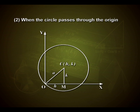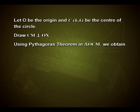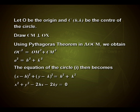In the next case, when the circle passes through the origin: let O be the origin and C at (h, k) be the center. Draw CM perpendicular to OX. Using Pythagoras theorem in triangle OCM, we obtain OC² = OM² + CM², that is a² = h² + k². The equation of the circle then becomes (x - h)² + (y - k)² = h² + k², which simplifies to x² + y² - 2hx - 2ky = 0.